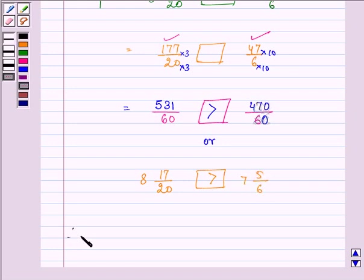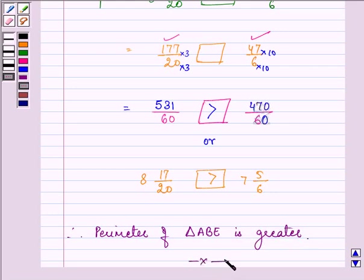perimeter of triangle ABE is greater. So this completes the session. Hope you understood it well and enjoyed it too. Have a nice day.